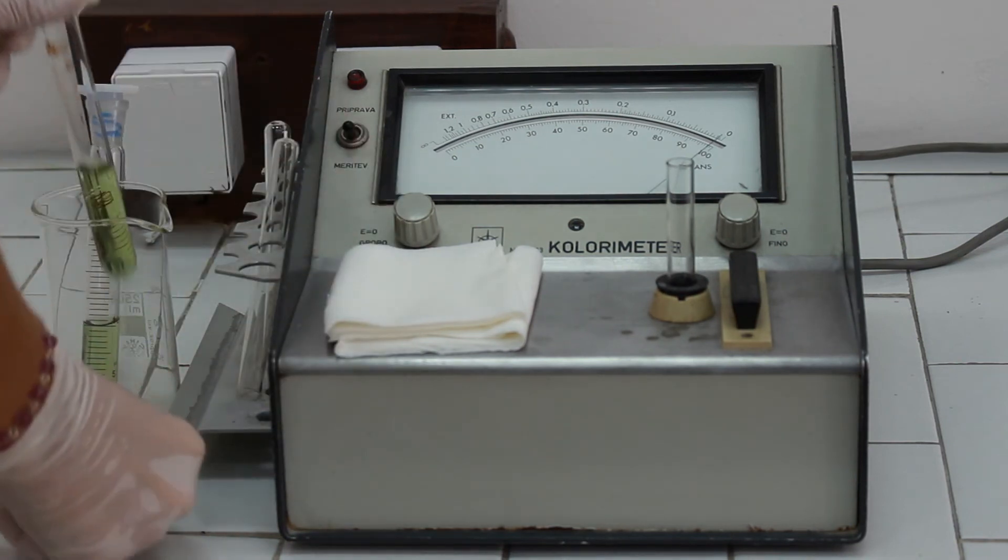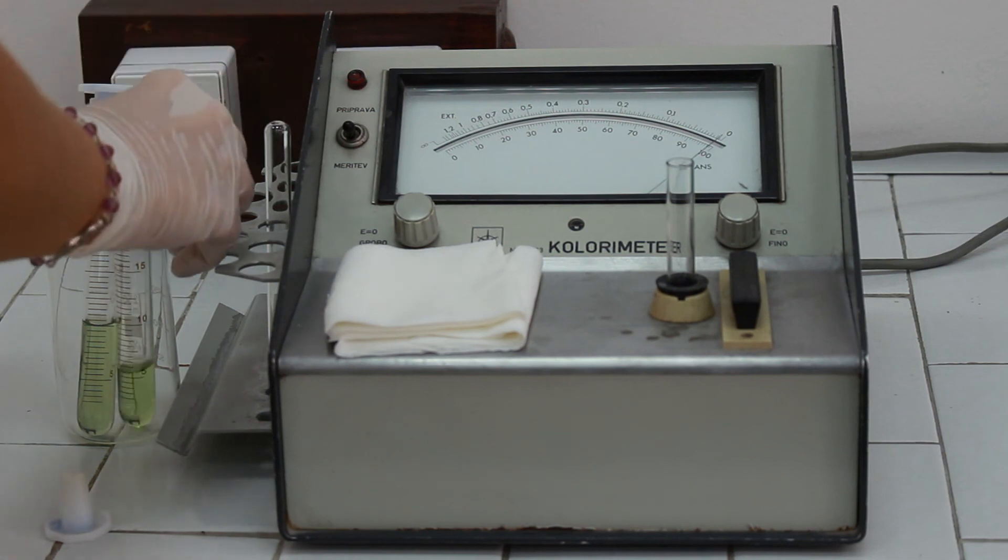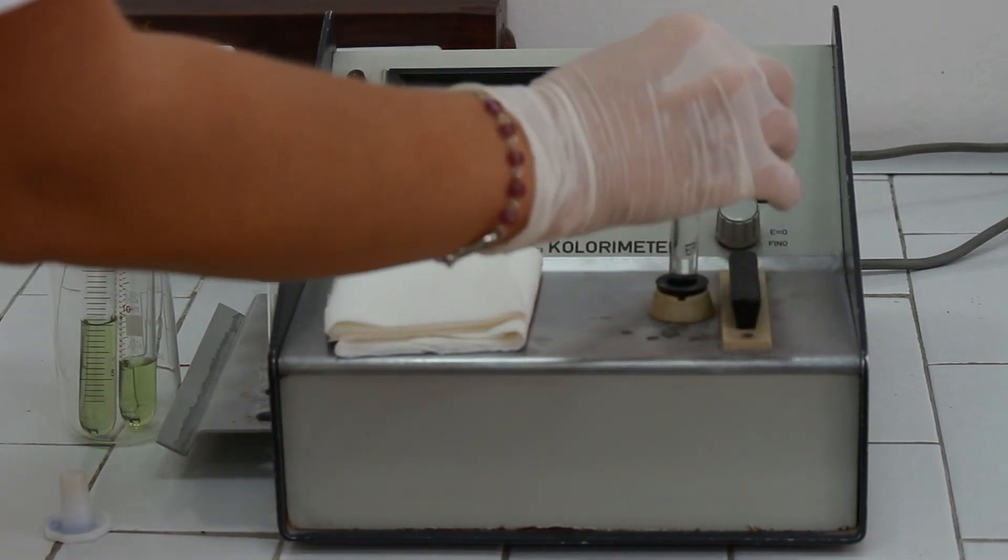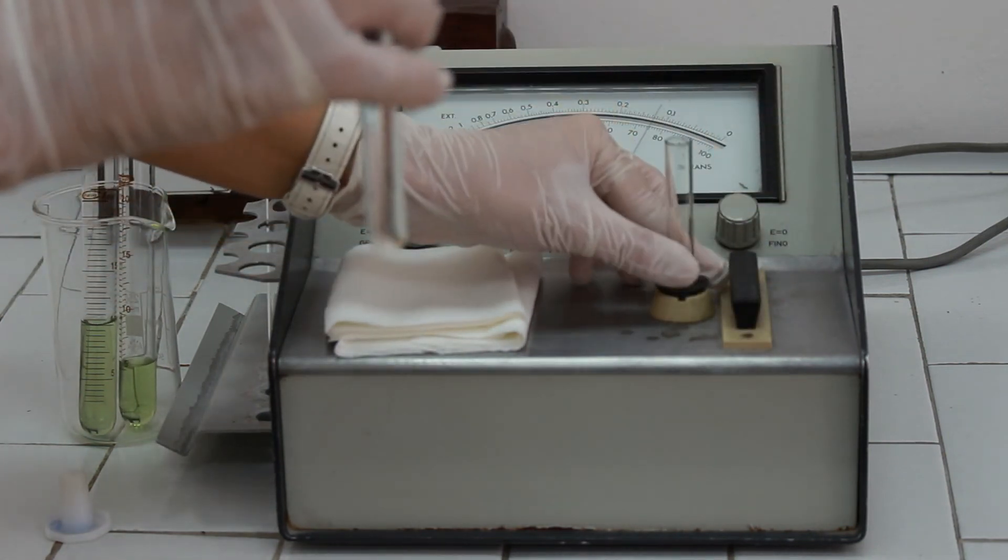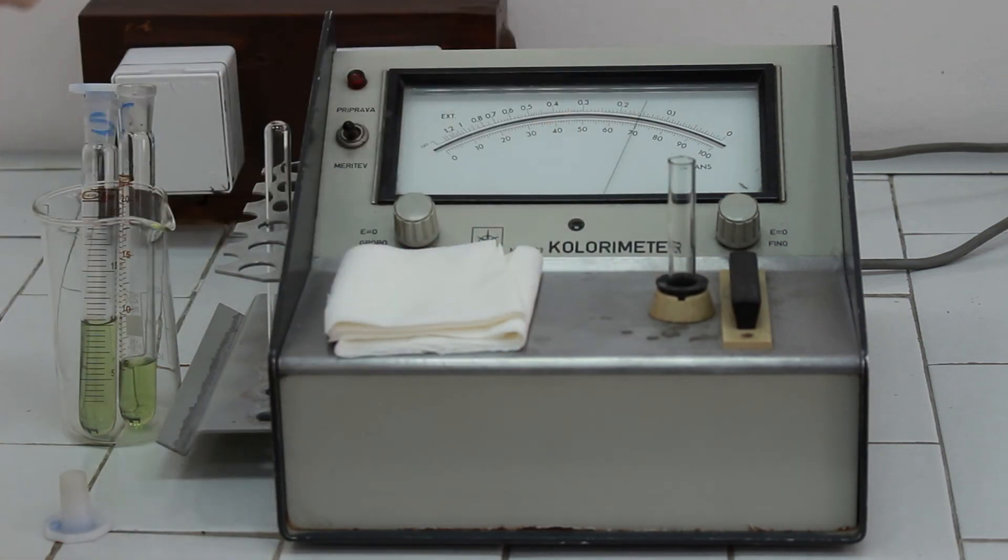And the right wheel is for the fine adjustments. When we did that, we are going to pour our test solution to another cuvette. Switch places with the blank solution and read the absorbance.